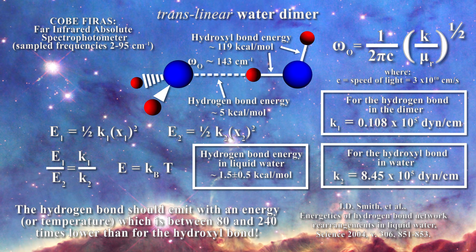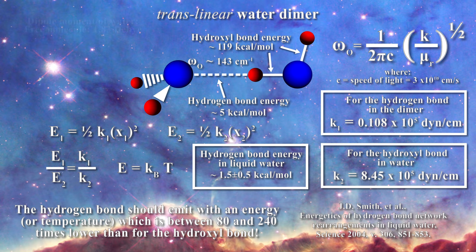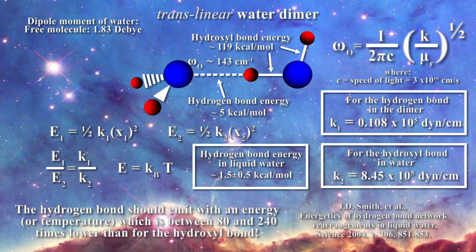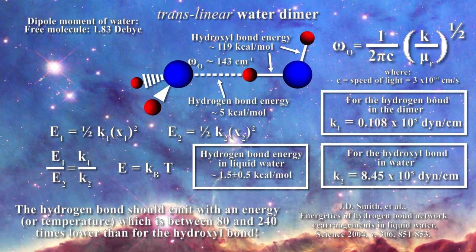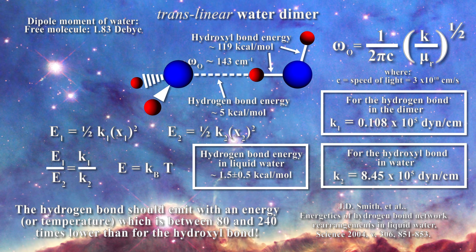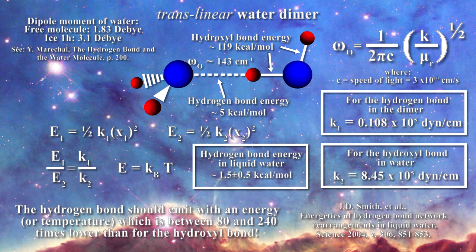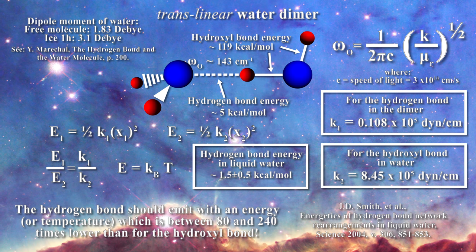Just consider what is happening to the dipole moment of water. In the free molecule, water has a dipole moment of about 1.83 debye which is actually substantial. However, in the condensed state such as ice 1h, the electric dipole moment increases dramatically to 3.1 debye. This speaks to the cooperation of the hydrogen bonding network in the condensed state.